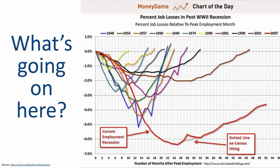This is a chart that is way too busy. There's too much information being communicated and it's not easy to understand at a glance. This is job losses in recessions post-World War II, and they've included every single recession since World War II. If I was creating this chart, I'd probably try to identify the three or four recessions most relevant to the point I'm trying to make, and only include those so it's easier to read and understand.